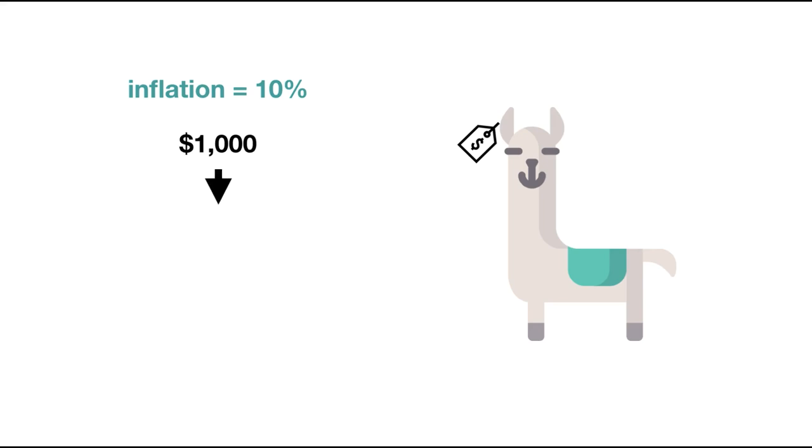For our purposes, we'll take the rate of inflation as given. So let's say inflation is 10%. If a llama costs $1,000 today, after one year it'll cost $1,100. Nothing has changed about the llama. He didn't get superpowers or anything. And yet I would have to pay an additional 10%, or $100, to buy him.